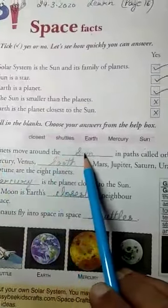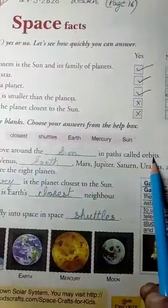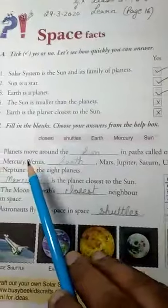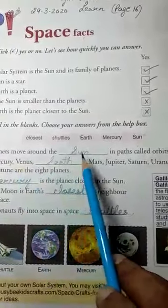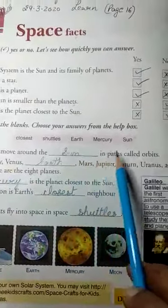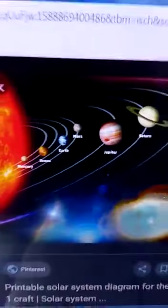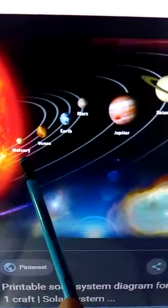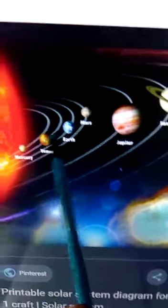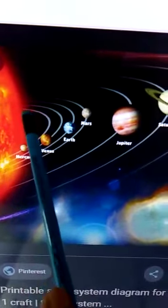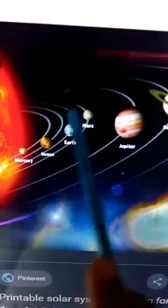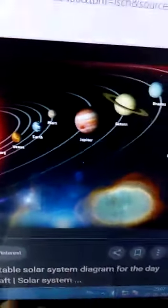Number one: Planets move around the sun in paths called orbits. Now there are eight planets in the solar system and they move around the sun in fixed path which is called the orbit. See in the diagram. This is the sun and these are the planets and they move around the sun in the fixed path. Can you see the rings here? This is the fixed path which is called the orbit.